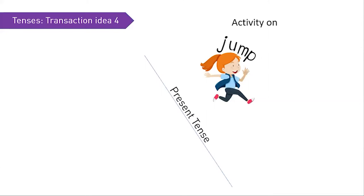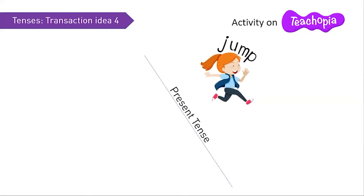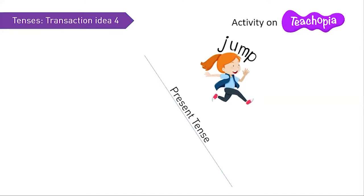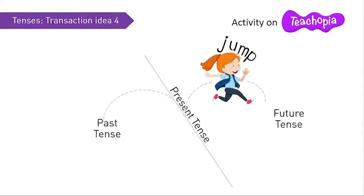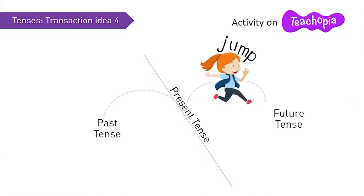In this activity, participants start by standing on a line drawn on the floor. The line represents the present tense. The area in front of the line is the future tense, and the area behind is the past tense. The teacher reads a sentence — if participants think it's in the future, they jump forward; if it's in the past, they jump behind. This helps the kinesthetic approach to learning, where learners listen to commands and respond with bodily movements.